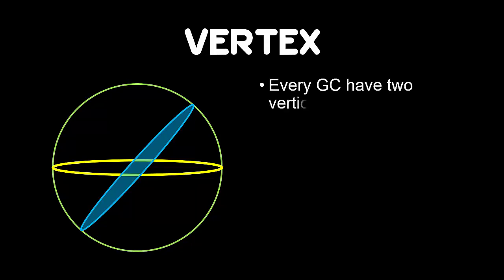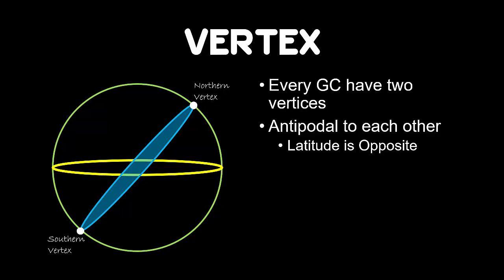The facts that you need to remember about vertex are: every great circle has two vertices, northern vertex in the northern hemisphere and southern vertex in the southern hemisphere. It is antipodal to each other. Latitude is opposite. If we were given northern vertex as 60 degrees north, the southern vertex should be 60 degrees south.